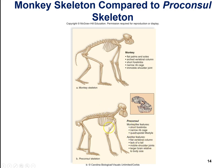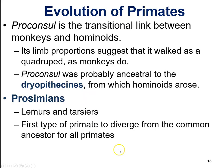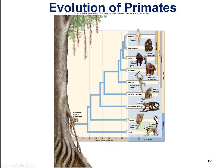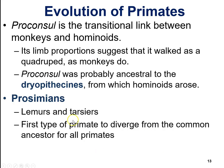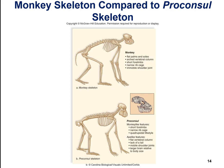Proconsul also showed ape-like features: a flattened vertebral column, lack of a tail, mobile shoulder joints, and a larger brain relative to body size. This fossil is believed to be the transitional link between monkeys and apes. Prosimians, shown at the base of the phylogenetic tree, were the first type of primate to diverge from the common ancestor — they are the most simple of the primates.